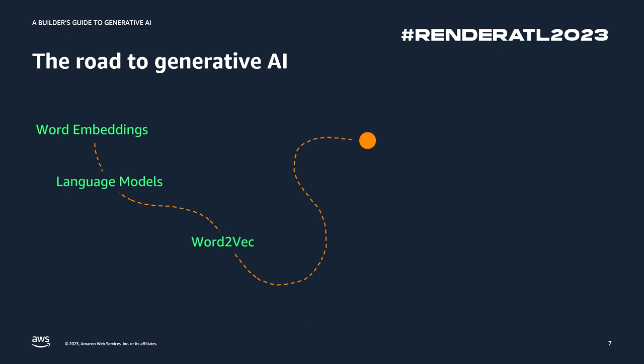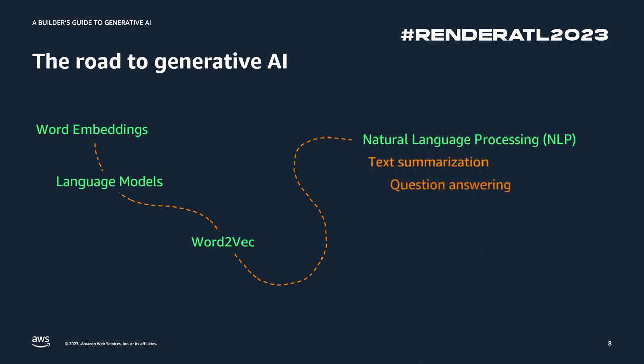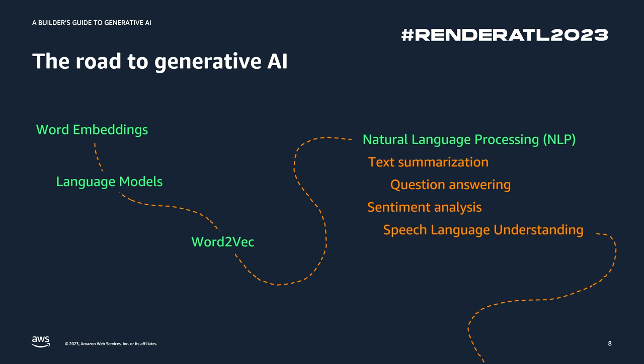This allows us to do something called word-to-vec, which is basically taking a word and making a vector — points we can plot on a line. This allows us to do natural language processing tasks: text summarization, question-answering, sentiment analysis, natural language understanding. If you use libraries like spaCy or NLTK in Python, you're doing kind of these foundational things in natural language processing.